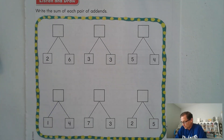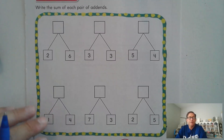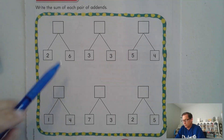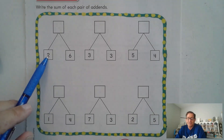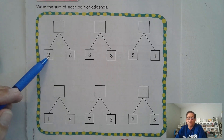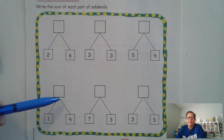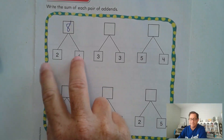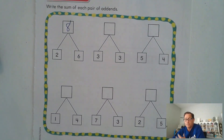All right. So two plus six — what strategy did you use? Well, one way you could have done it is start at six and just add two more: six, seven, eight. You could have gone from two and added six to that. There's no right or wrong way to do it. Some of you might have just looked at six and two and said, oh, that's eight. And that's fine.